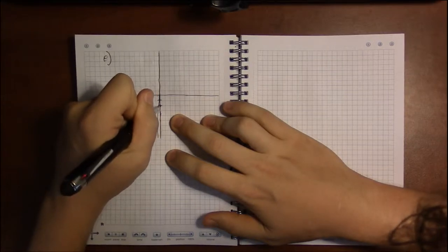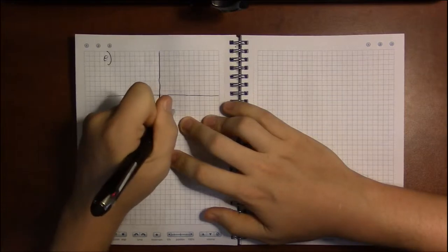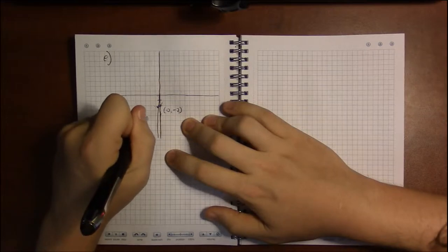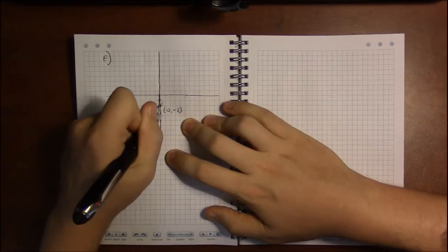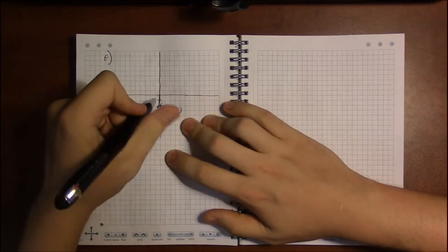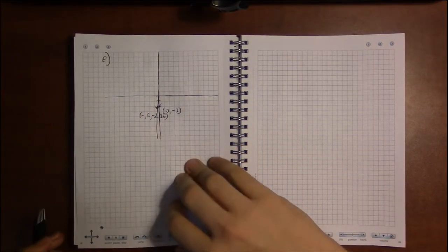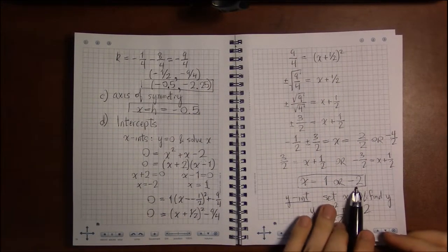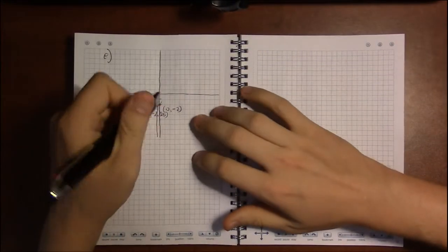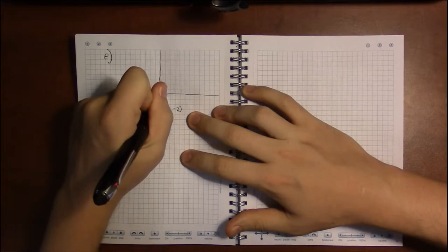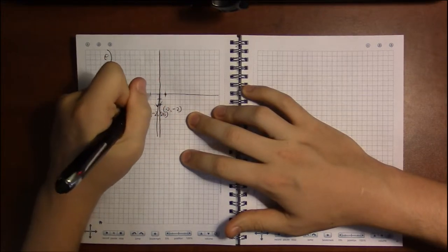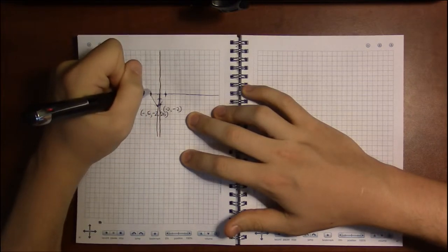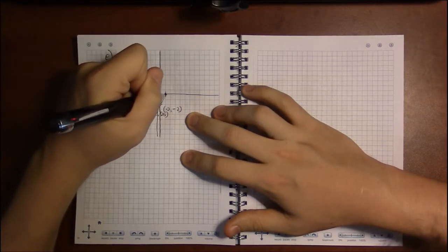The graph is going to open upwards. In fact, we're going to hit the point 0 minus 2. That was the y-intercept. Minus 0.5 comma minus 2.25. That's our vertex. And then, what did we get as our x-intercepts? We got 1 and minus 2. So, on the x-axis, I'm going to mark x equals 1 and x equals minus 2. Because those are our x-intercepts.